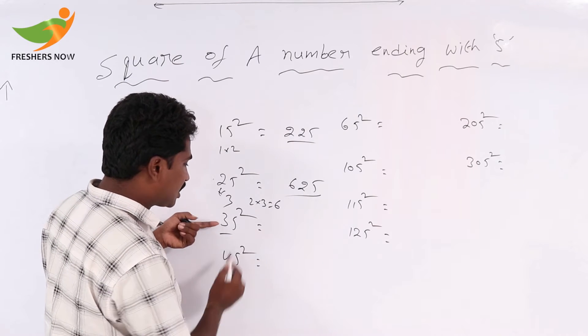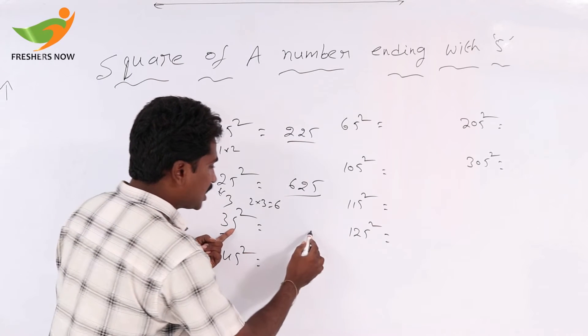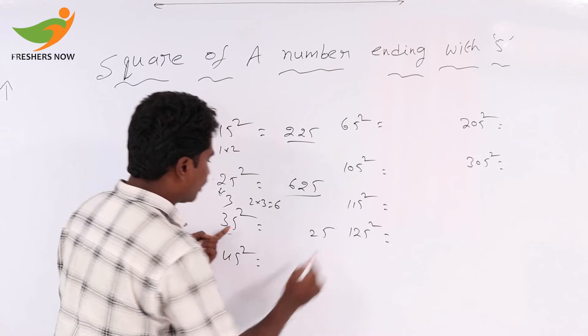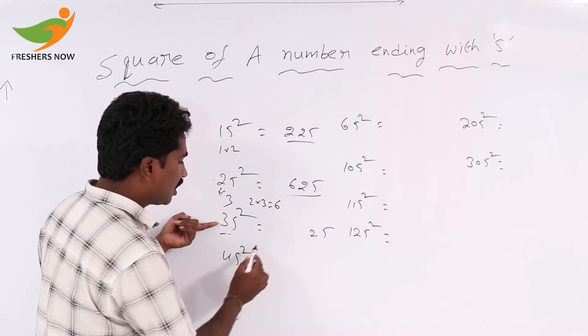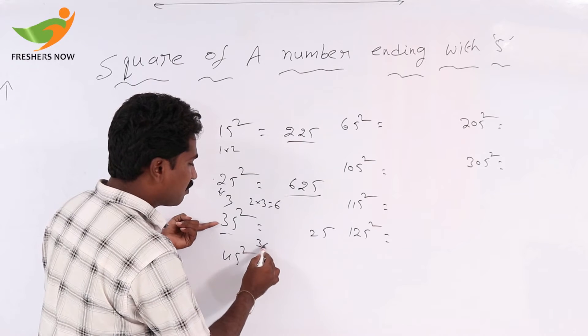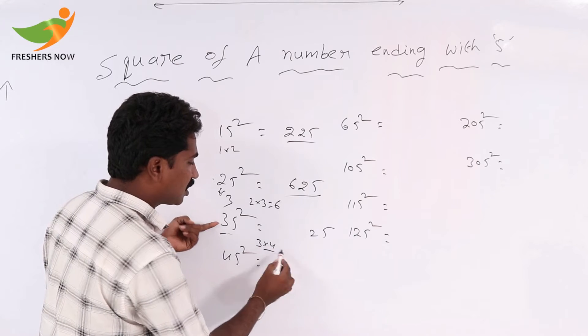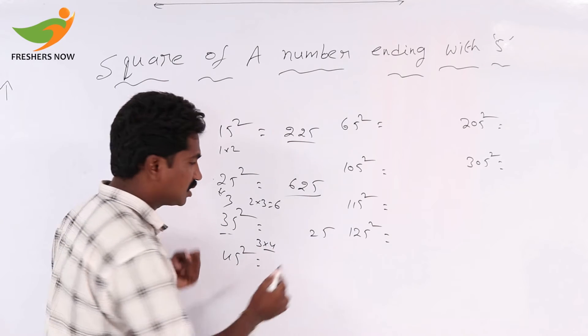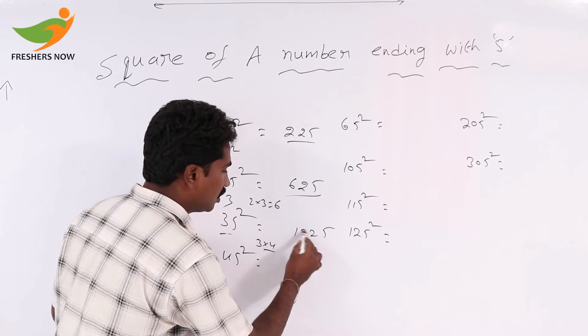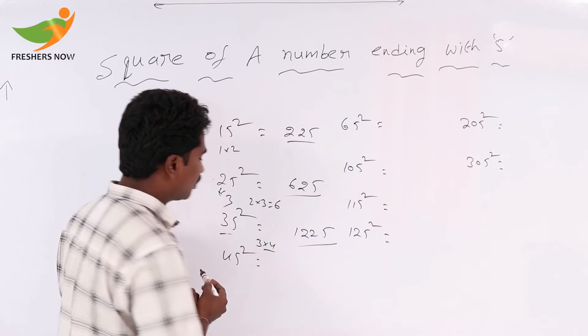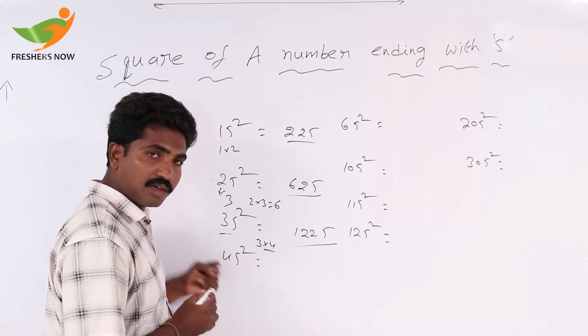For 35 square: 5 square equals 25. The tens digit is 3. The next number after 3 is 4, so 3 into 4 equals 12. So 35 squared equals 1225.